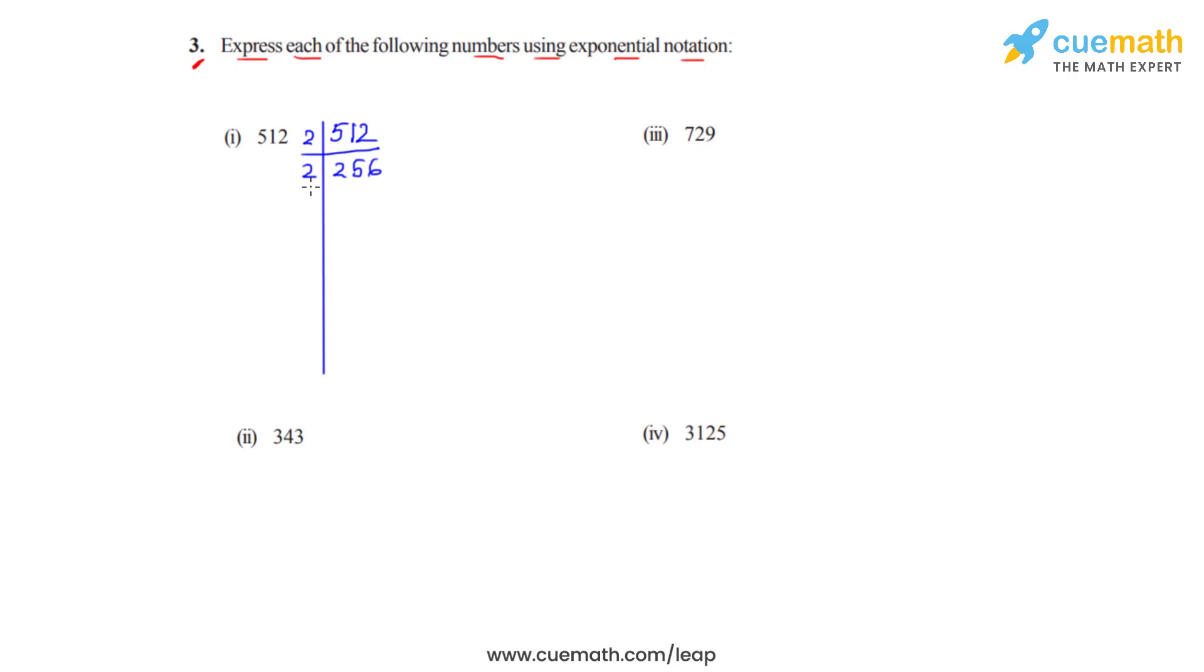Dividing it by 2 again gives us the answer as 128. Dividing it by 2 again gives us the answer 64. Dividing 64 by 2 again gives us the answer 32. Dividing 32 by 2 gives us the answer as 16. Dividing 16 by 2 gives us the answer as 8. Now we know that 8 is a cube of 2 so this can be written as 2 cube.